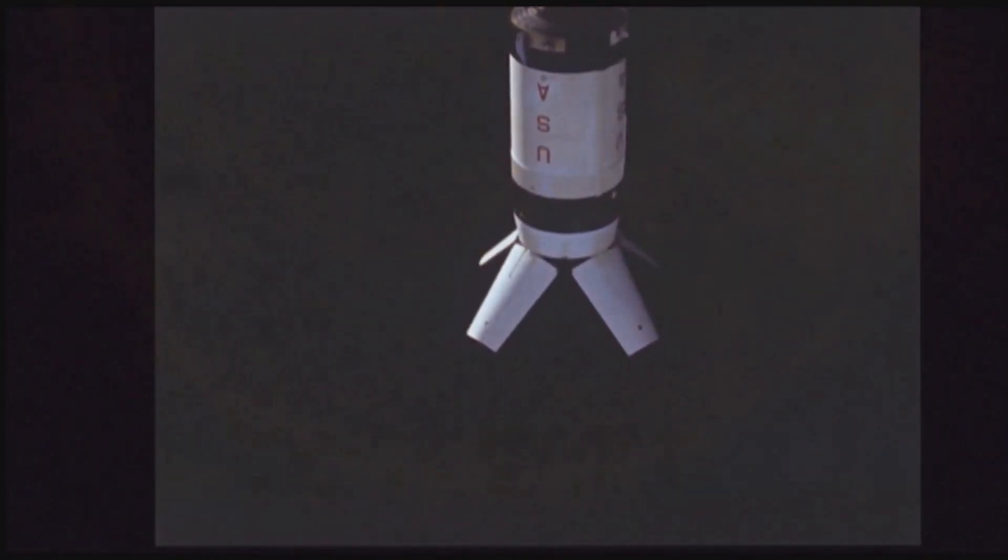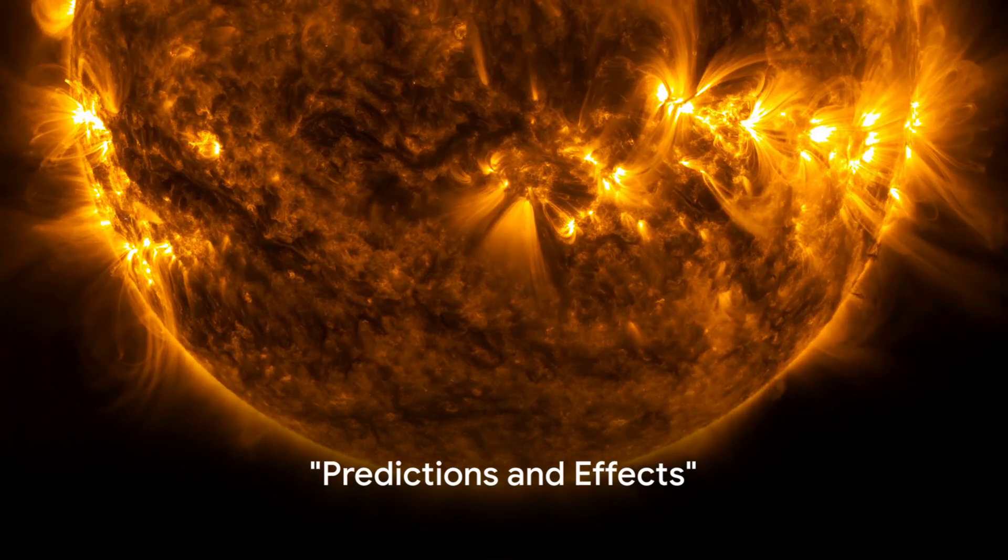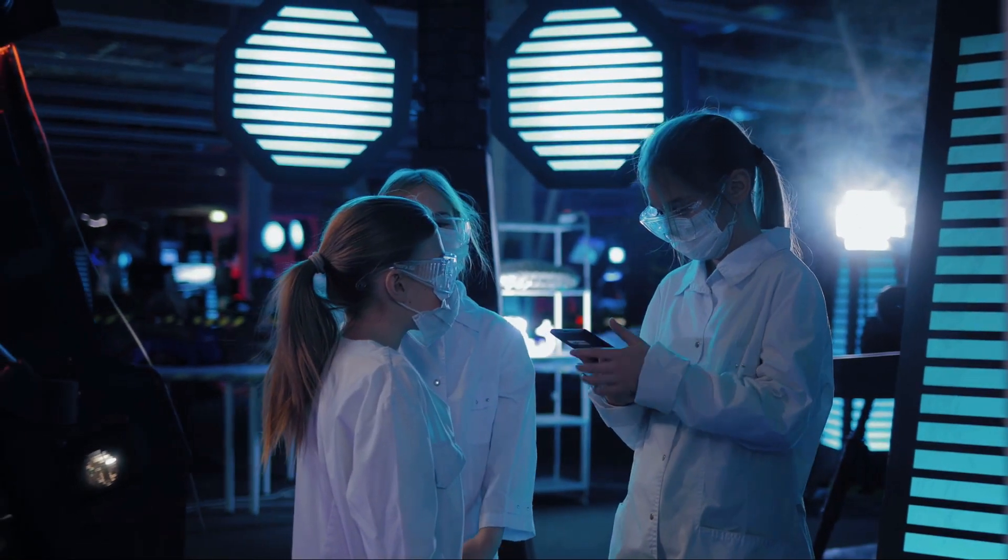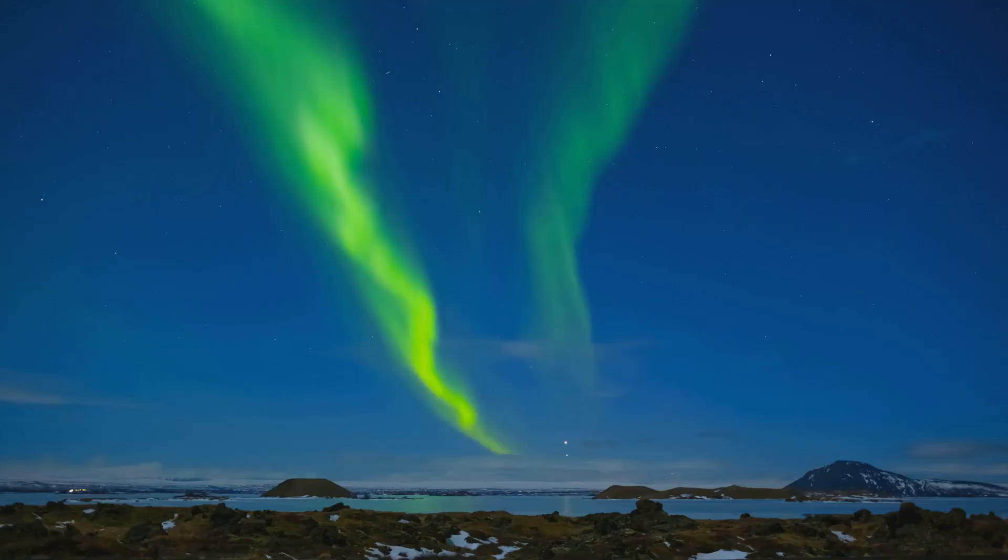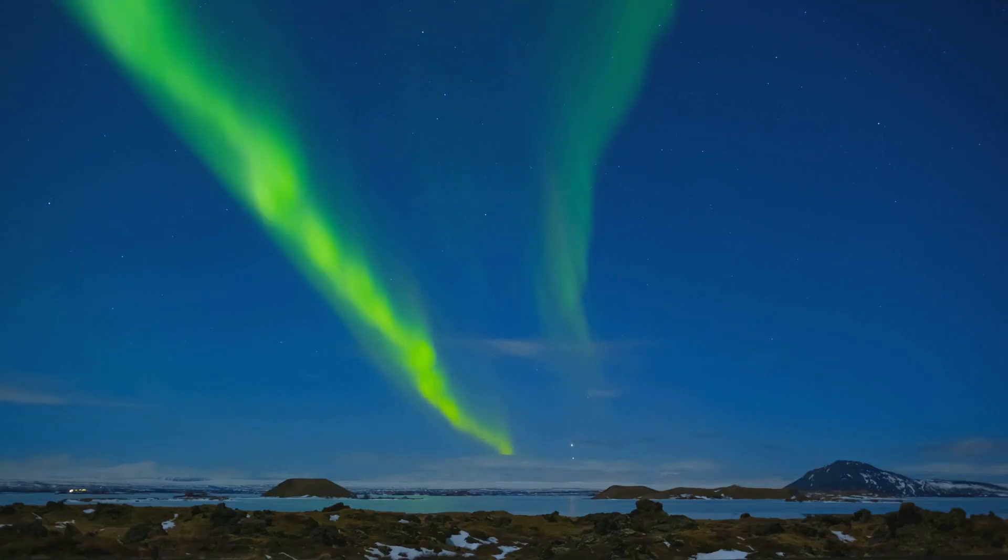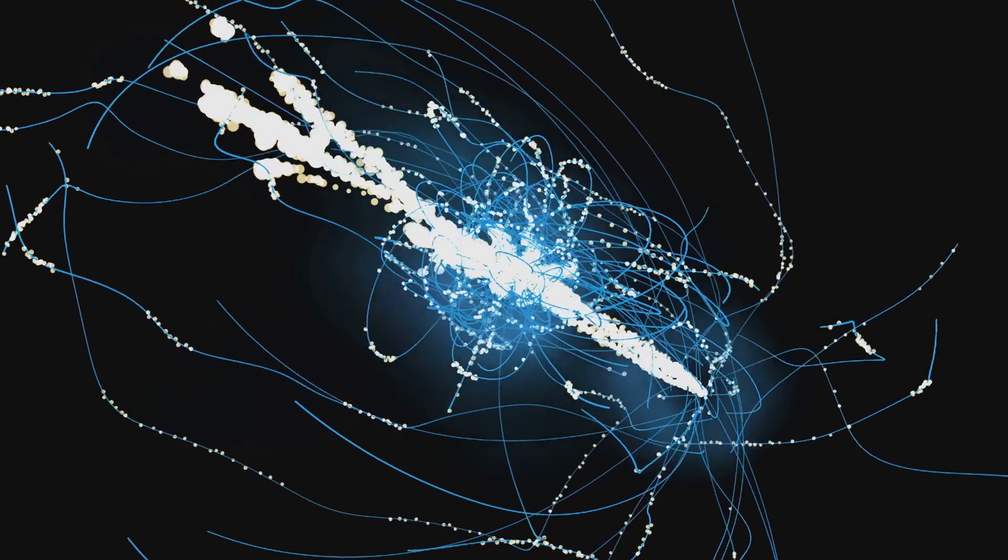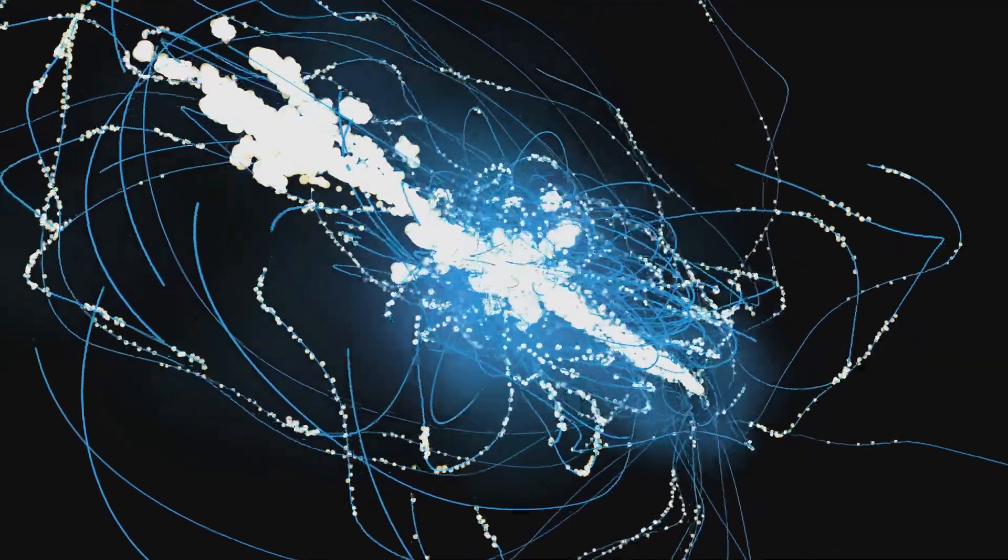Now, back to the mighty coronal hole. What could this coronal hole mean for our planet? It's a question that's been on the minds of scientists since its appearance. Initial predictions pointed towards the possibility of a moderate geomagnetic storm, also known as a G2 storm. This could have triggered radio blackouts and painted our skies with vivid aurora displays.